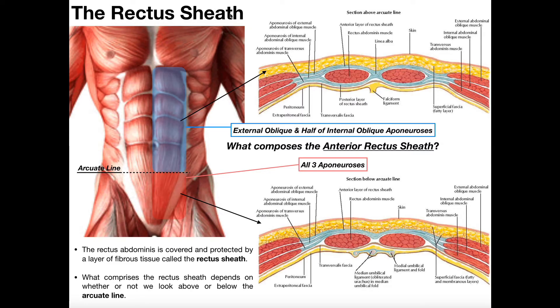When we think of a sheath, like for a sword — Lord of the Rings would be a great example — where when somebody's not using their sword, they have it in a protective case, usually either held by their side or sometimes on the back. That would be the sheath of the sword. And so the rectus sheath is going to be a protective covering for the rectus abdominus muscle, which we see right here.